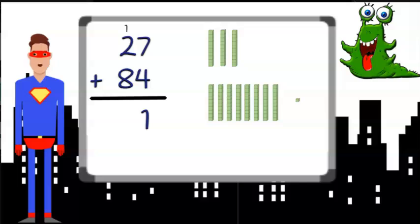Now I can add up all the tens. I had 8 tens plus 2 tens, which is 10 tens, plus my one more makes 11 tens. That gives me 111.